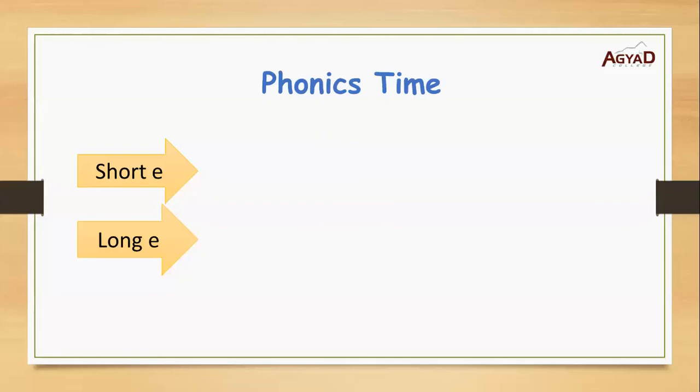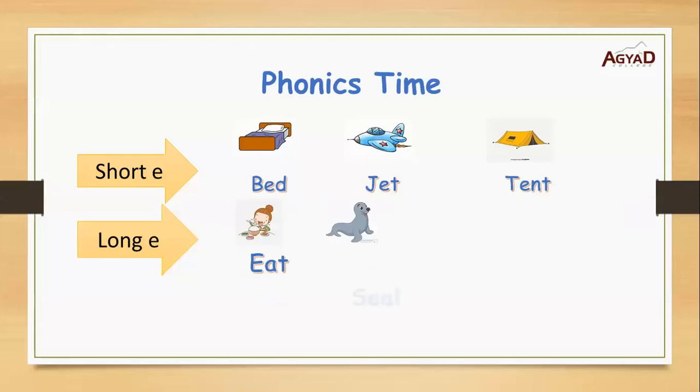For next time, how do you pronounce the short E? E, E, E. Like bed, jet, and tent. But how do you pronounce the long E? It's E. Like eat, seal, and bead.